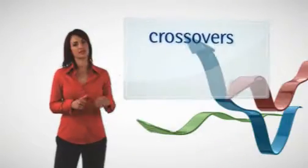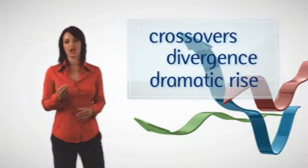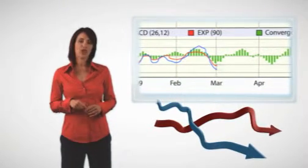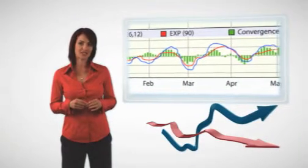We can interpret the MACD in three ways: crossovers, divergence and dramatic rise. Crossovers are when the MACD falls below the signal line, which indicates that it may be time to consider selling. However, when the MACD rises above the signal line, it suggests the price of the instrument is likely to rise. Many traders wait for confirmation that the MACD has moved above the signal line before entering into a position too early.